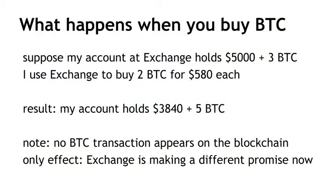It's important to understand what happens if you buy or sell Bitcoins in an exchange. Suppose my account starts holding $5,000 and three Bitcoins, and I put in an order to buy two Bitcoins for $580 each. Eventually the exchange finds someone willing to take the other side of that transaction. The result is that now I have five Bitcoins instead of three, and I also have $3,840 — that's my $5,000 minus $580 times two. But the important thing to note is that when this transaction happened, no transaction actually occurred on the Bitcoin blockchain.